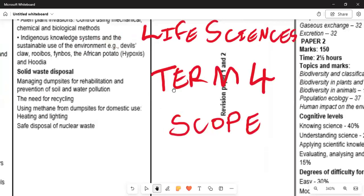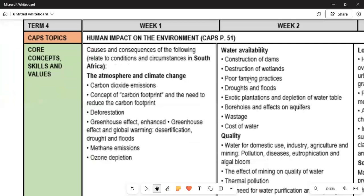The work that should be covered: human impact on the environment. You need to understand the causes and consequences related to conditions and circumstances in South Africa. The atmosphere and climate change: carbon dioxide emissions, the need to reduce the carbon footprint, deforestation, greenhouse effect, enhanced greenhouse effect and global warming, desertification, drought and floods, methane emissions, and ozone depletion.